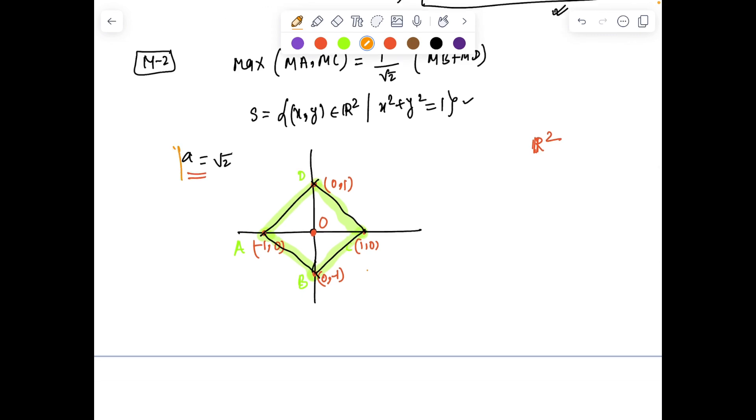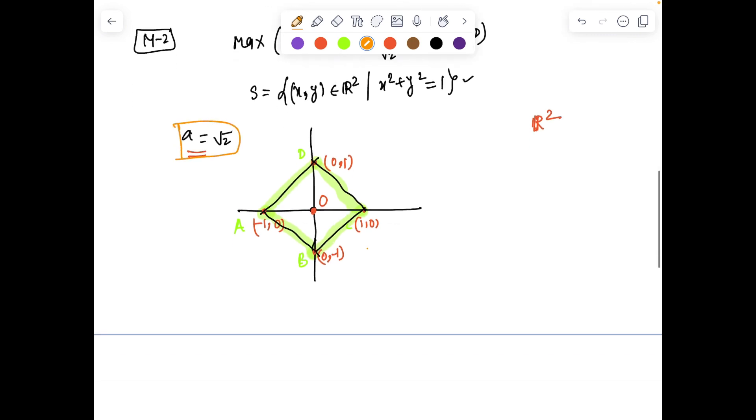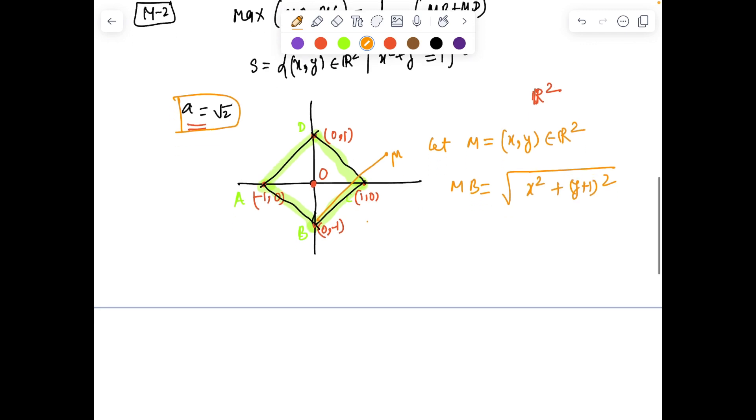For this square the side length I've taken as √2. Since a is √2, now let M be a point (x, y) in this 2D world. Then MB is going to be √(x² + (y+1)²), because if I take any point M you can see clearly MB is this distance.